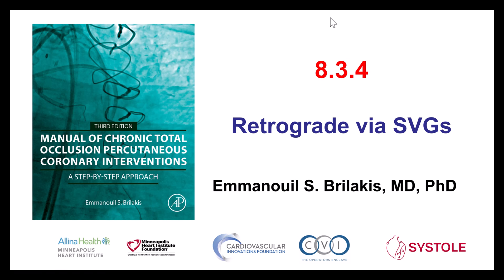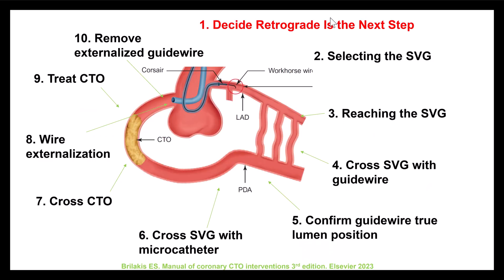Hi, this is Manos Brilakis, presenting video 8.3.4 for the Manual of CTO Interventions. This is a video describing the retrograde approach through saphenous vein grafts. There are 10 steps for the retrograde approach, and we will discuss each step as it applies to retrograde through vein grafts.